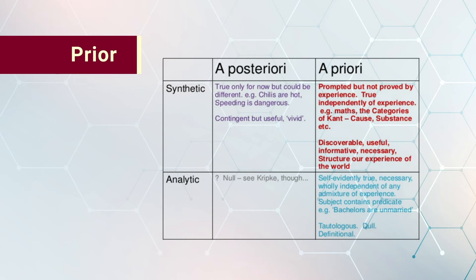In a tabulated comparison between posteriori and priori, synthetic and analytic are key ingredients. In synthetic terms, the posteriori gives the true value for now but could be different — for example, chilies are hot, speeding is dangerous; it is contingent but useful. For priori in synthetic terms, it is prompted but not proved by experience — true independently of experience — such as mass, the categories of Kant: cause, substance. In analytic terms, the priori is self-evidently true, necessary, wholly independent of experience; for example, bachelors are unmarried.